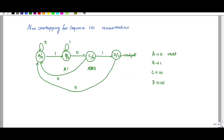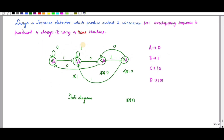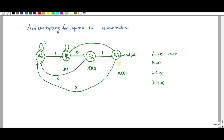For D with input 1: when 1-0-1-1 comes, you remove the first bit — 0-1-1 is not available; remove the second bit — 1-1 is not available; remove the third bit — it is 1, which is B. So for input 1 from D it goes to B. The only change compared to overlapping is that for input 0, instead of going to C, it goes to A.